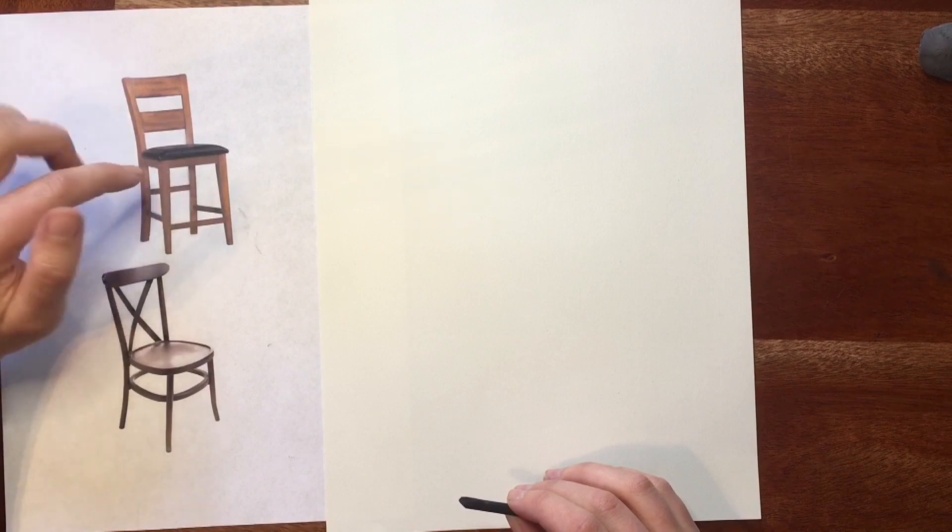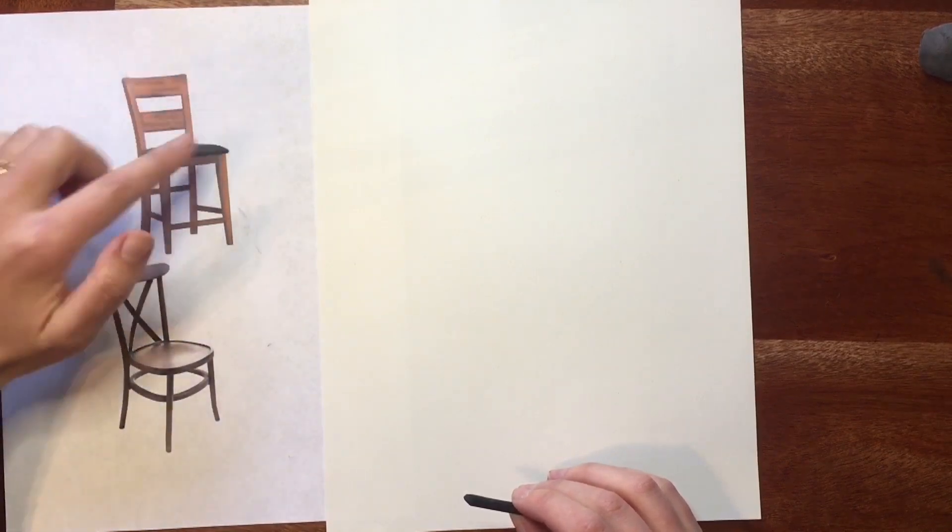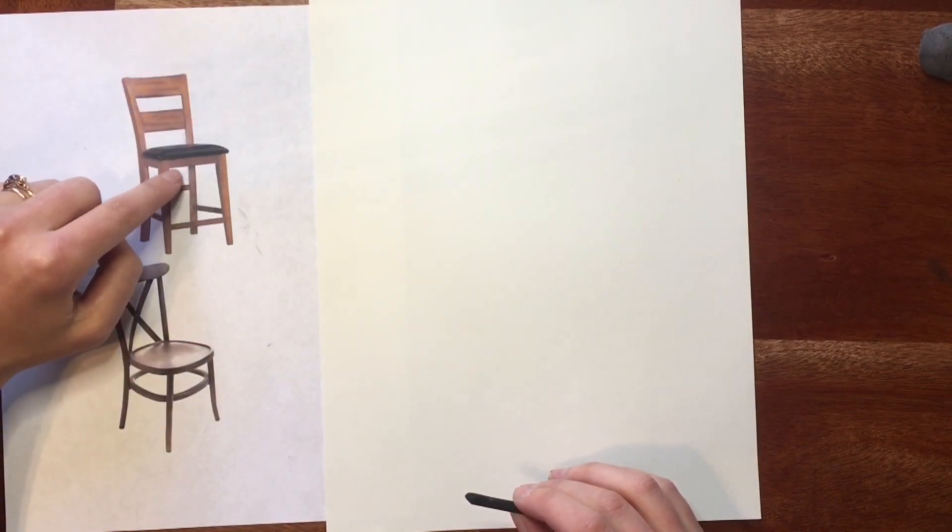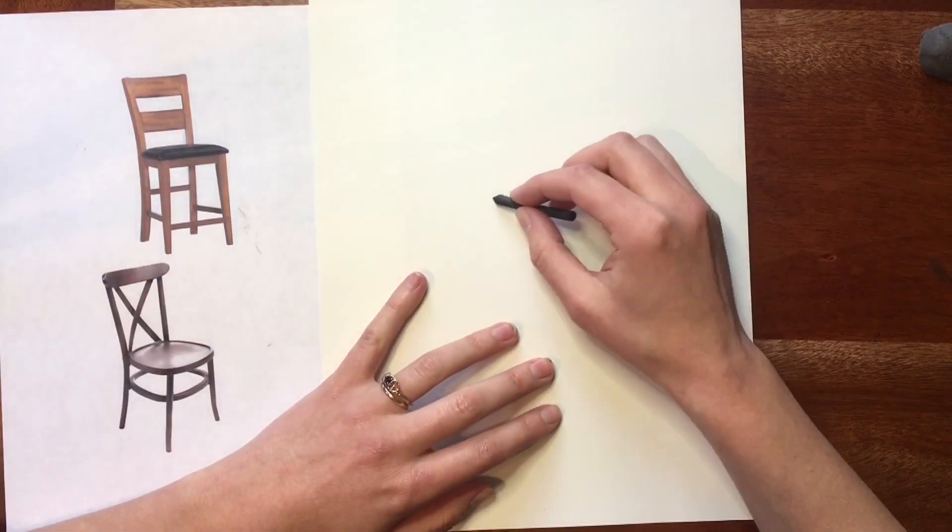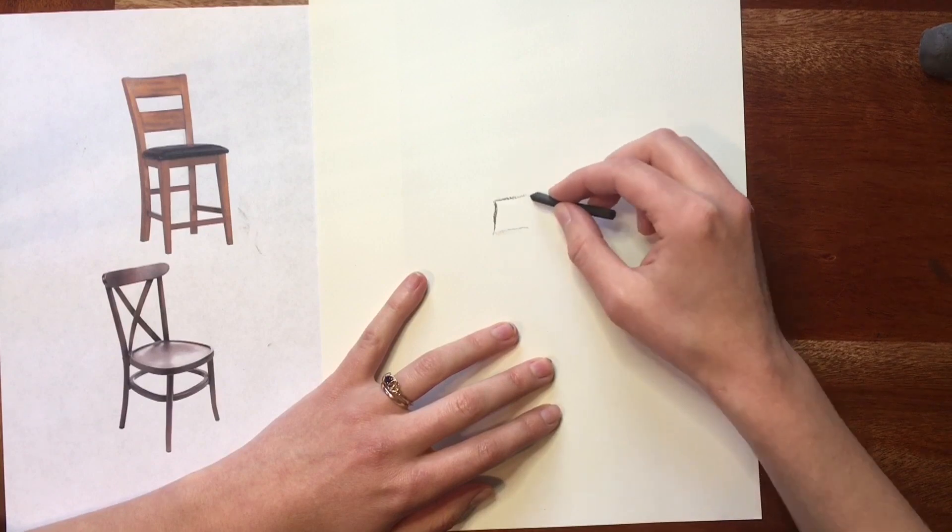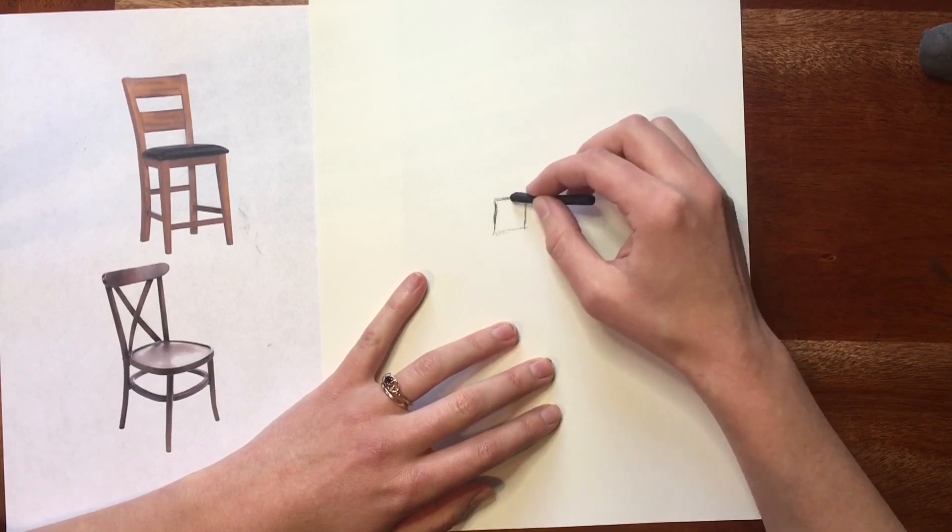When I start, I like to choose a section that's towards the middle of your image. So I'm going to be starting with this little shape right in here. Really focus on getting all those angles right.